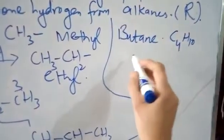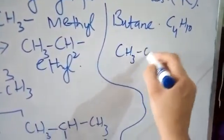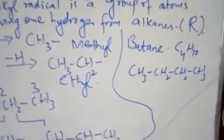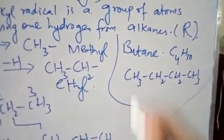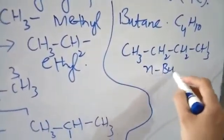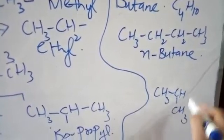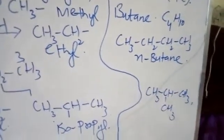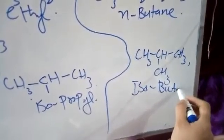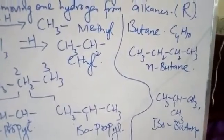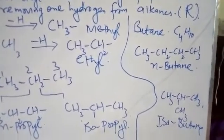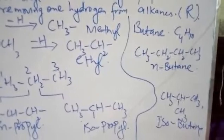When we draw butane structures, its condensed structural formula is CH3-CH2-CH2-CH3. Butane has two isomers: one is N-butane, when we arrange it in a straight chain, and isobutane, which shows branching. Both contain 4 carbons and 10 hydrogens. We need to derive radicals from both isomers.